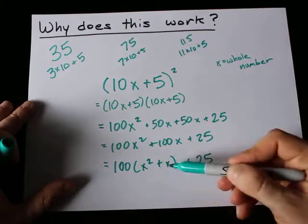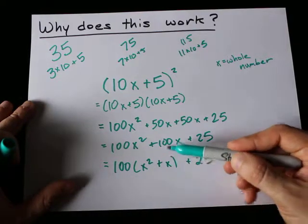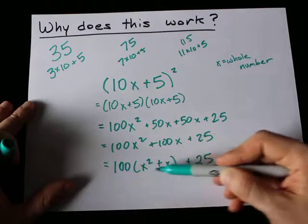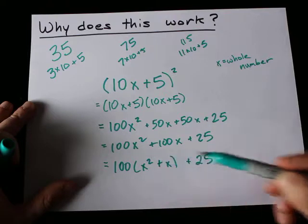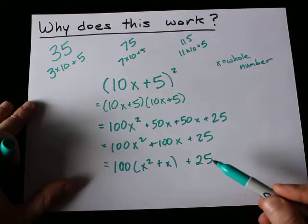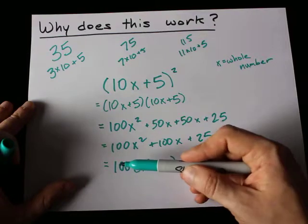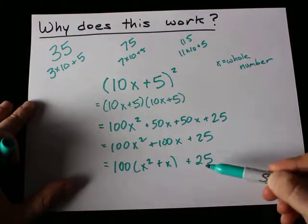And because x is a whole number, this x squared plus x ends up being a whole number. And because I'm multiplying it by 100, it means whatever number I get here will always end in two zeros. This ends up being in the hundreds place. And so the 25 will be undisturbed every single time. Whole number times 100 gives you an even hundred. And when you add 25, you get that many hundred, plus 25.